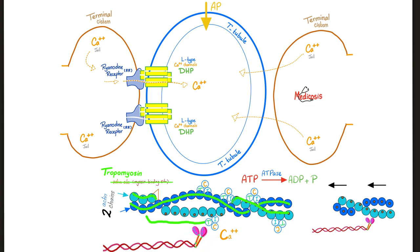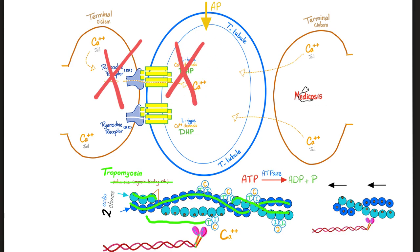Some pharmacology integration: there is a group of drugs that inhibit the ryanodine receptors — they are muscle relaxants because there will be no contraction. An example is dantrolene. There is another group of muscle relaxants known as calcium channel blockers, especially the dihydropyridine calcium channel blockers such as nifedipine, amlodipine, etc.